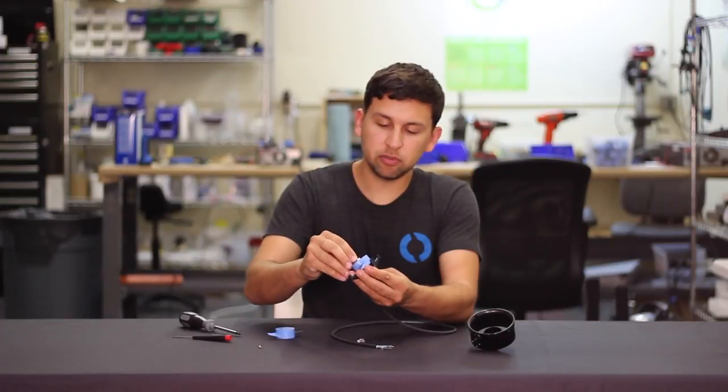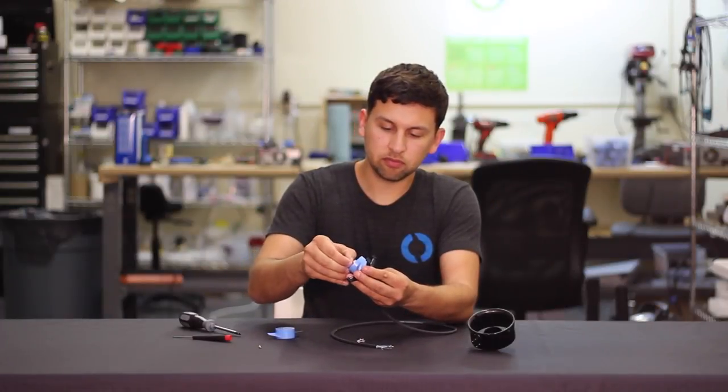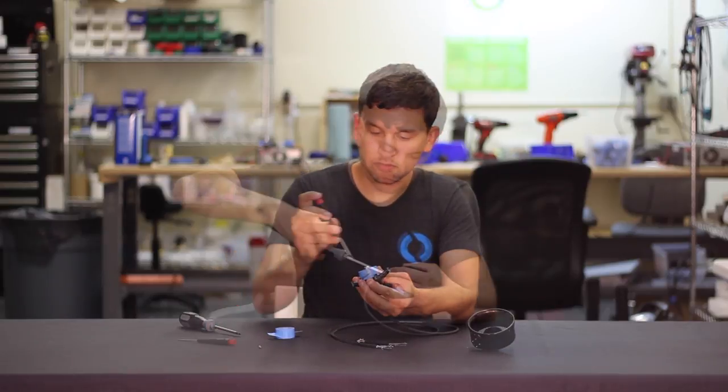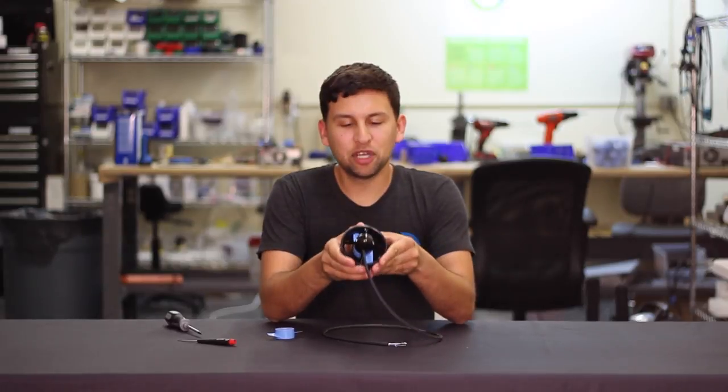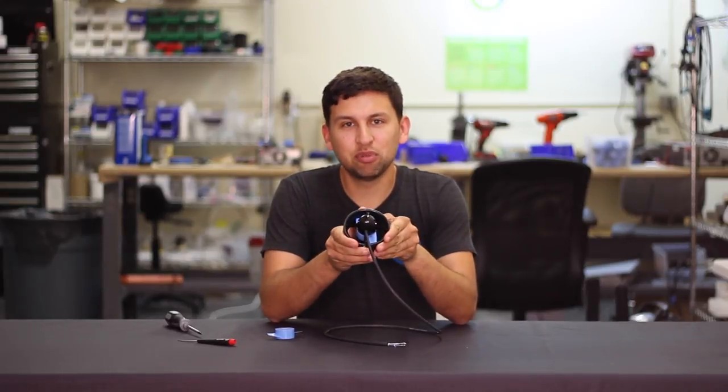Then we'll put the screws back in and repeat everything else in reverse. There we go, we're ready to run with the opposite direction propeller installed.